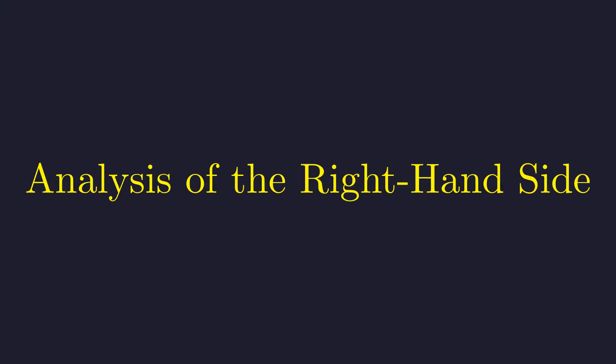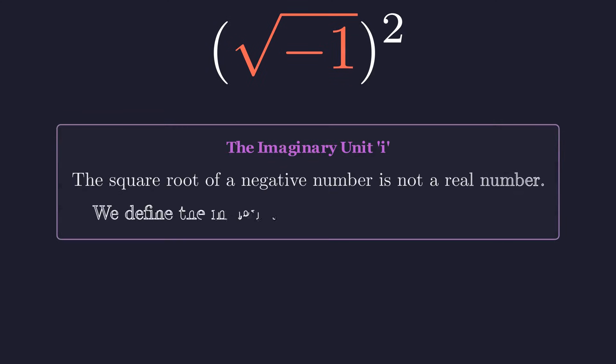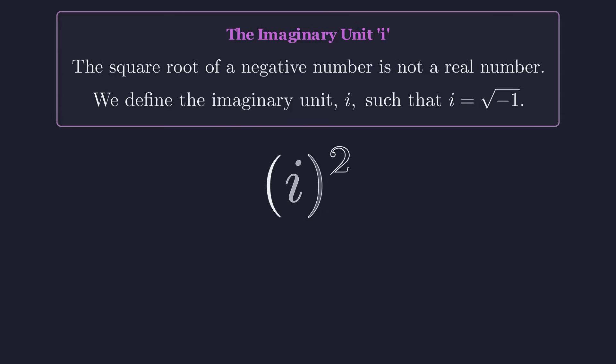Now let's look at the right side. Here we're squaring the square root of negative one. First, we need to deal with what's inside these parentheses. The square root of negative one isn't a real number, so we define the imaginary unit i to be exactly that, the square root of negative one. So we can replace the square root of negative one with i.